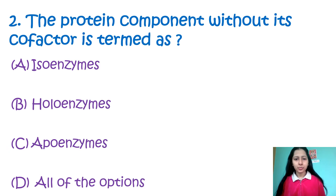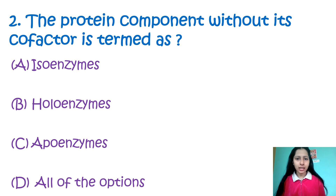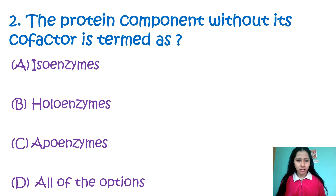Question 2: The protein component without its cofactor is termed as — option A: isoenzyme, B: holoenzyme, C: apoenzyme, D: all of these. Isoenzyme refers to enzymes that differ in amino acid sequences but catalyze the same chemical reactions. Holoenzyme is a protein component with its cofactor. So the correct option is apoenzyme — that is, a protein component without its cofactor — option C.